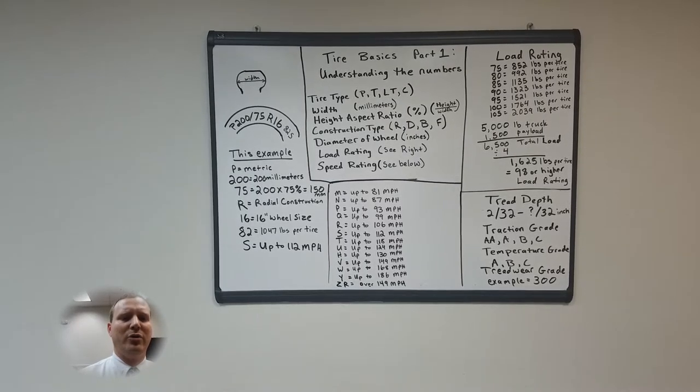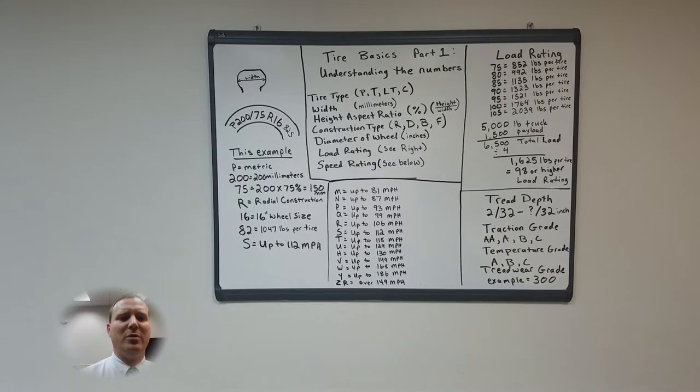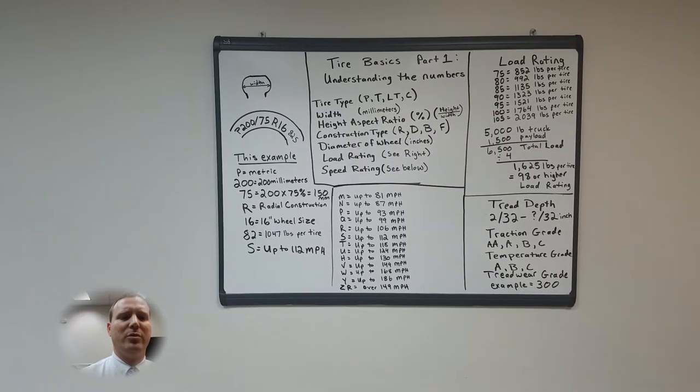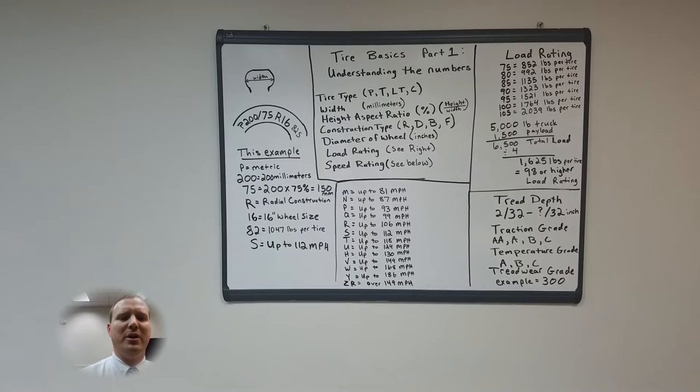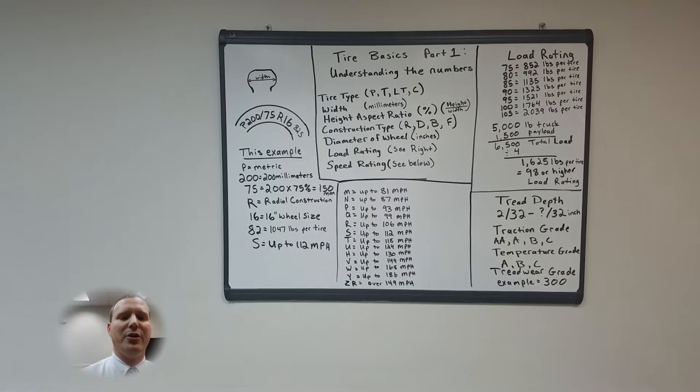And a tread wear grade which is in the form of a three-digit number like 100, 200, 300, 540. This number is very vague as it is assigned by the manufacturers and not by a third party.